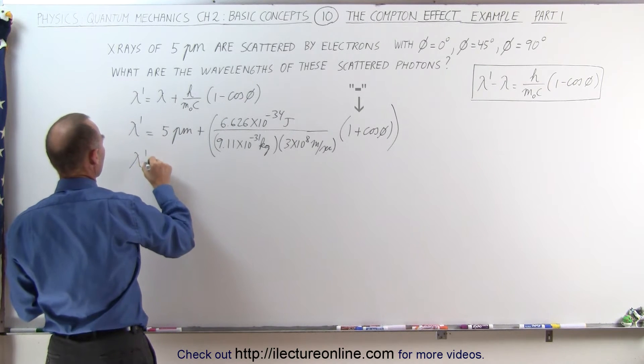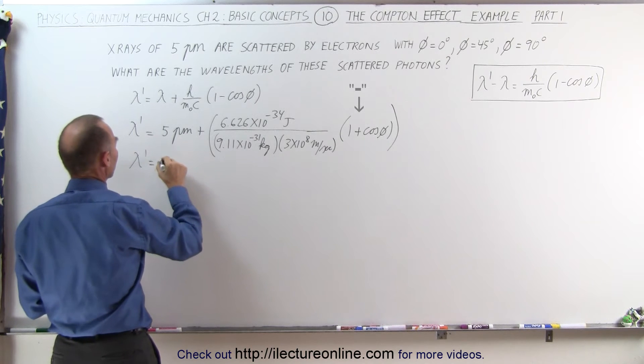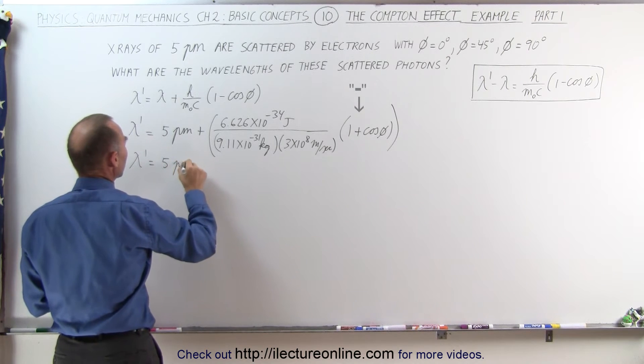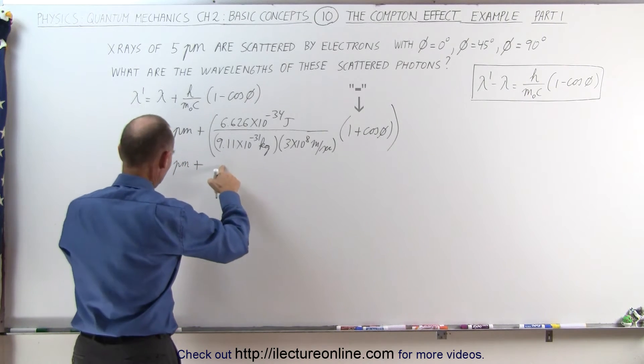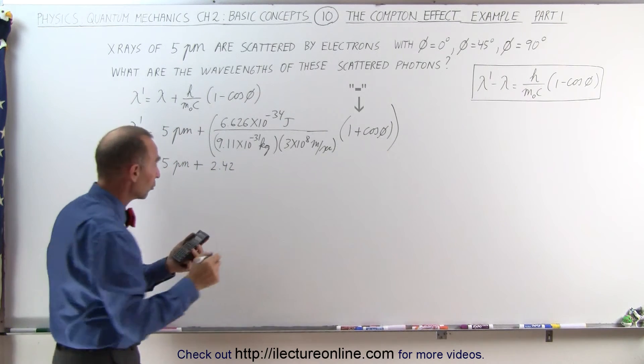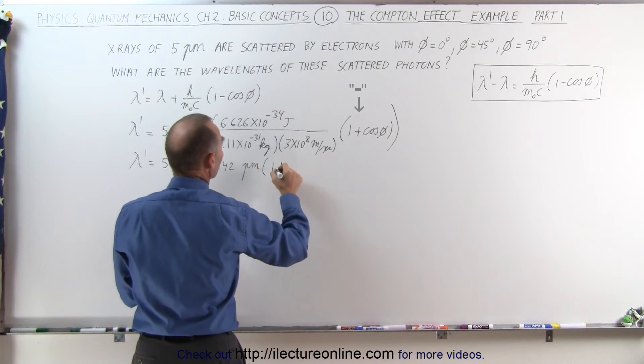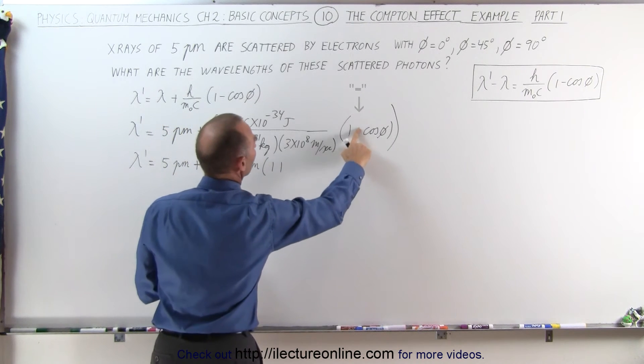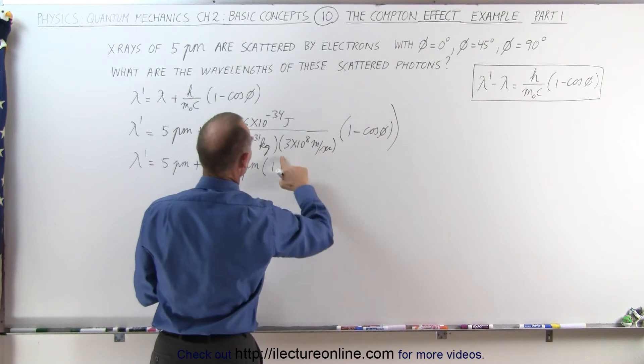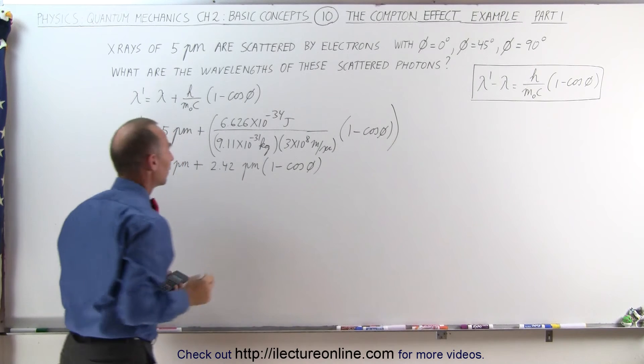Lambda prime, the wavelength of the scattered photons, are going to be equal to 5 picometers plus that's going to be 2.42 times 10 to the minus 12, which is of course picometers, times the quantity 1 minus the cosine of phi.